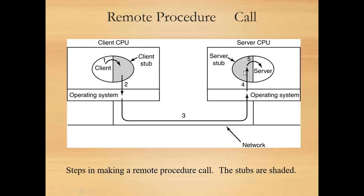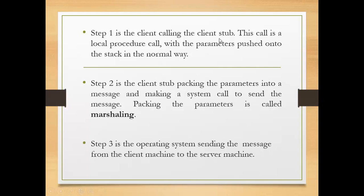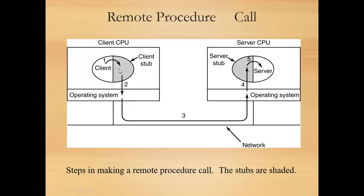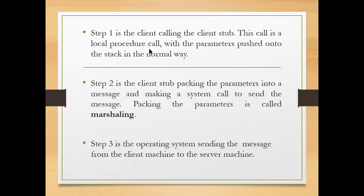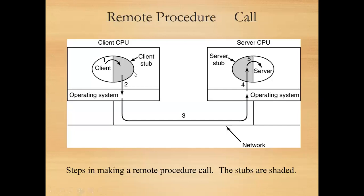Then there is a message passed to the server stub on the server side, and the server stub is unmarshaling. Here is marshaling, and here is unmarshaling. Step one is the client calling the client stub — this call is a local procedure call with parameters pushed onto the stack in a normal way. Step two: the client stub is packing the parameters into a message and making a system call to send the message. Packing the parameters is called marshaling.